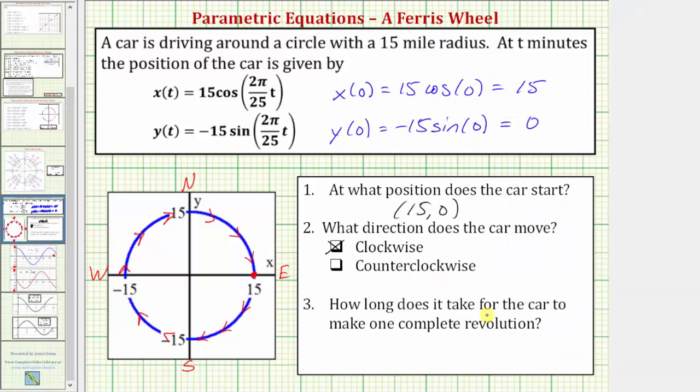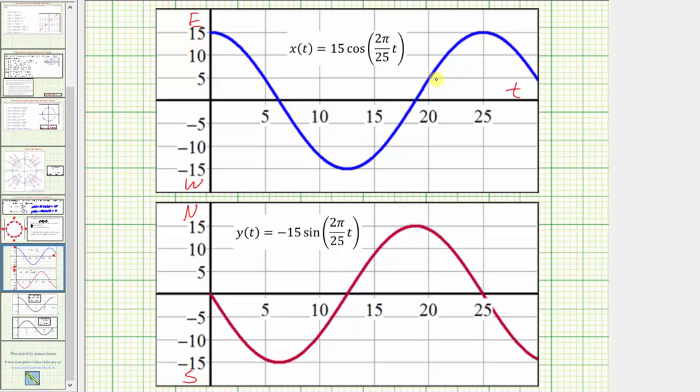And the last question is how long does it take for the car to make one complete revolution? Well again, going back to the graphs of x of t and y of t, we can see both of these graphs have a period of twenty-five, which means it takes twenty-five minutes for the car to make one revolution around the circle.